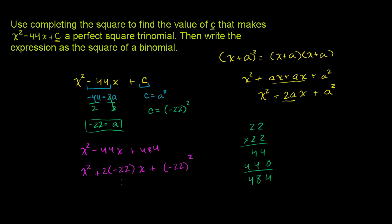And when you view it that way, it's pretty clear that this is a perfect square. And if you were to factor it, it's the same thing as (x - 22)(x - 22), or (x - 22)². These are all equivalent statements.